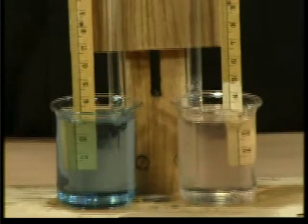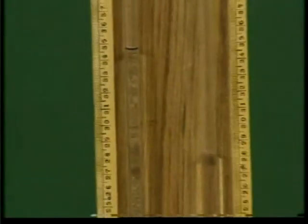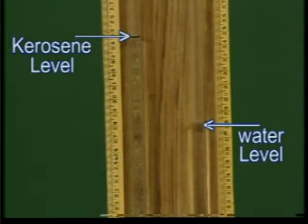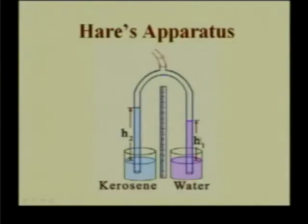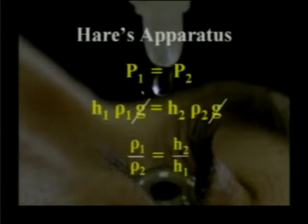When you suck air through the tube, the water and liquid stand at some height. Let h1 be the height of the water column and h2 be the height of the liquid column, that is kerosene. At both ends of the tube at the surface of liquids, the atmospheric pressure is constant — so pressure P1 equals P2. The pressure balance gives: h1·ρ1·g = h2·ρ2·g. Cancelling g, we get ρ1/ρ2 = h2/h1.